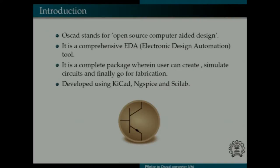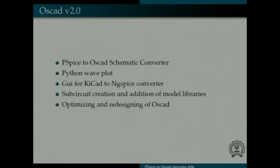What was the need for such a tool was there is hardly an open source tool which can do all of these together. Other software like cadence and ORCAD are way too expensive compared to OSCAD which is open source and free for everyone to use. Our version OSCAD version 2.0 is basically an enhancement optimization and bringing together all the things that were discrete before. What we have done is we have converted from PSPICE to OSCAD schematic converter, there is a Python wave plot, a GUI for KICAD to NG Spice converter, sub circuit creation and finally optimizing and redesigning.